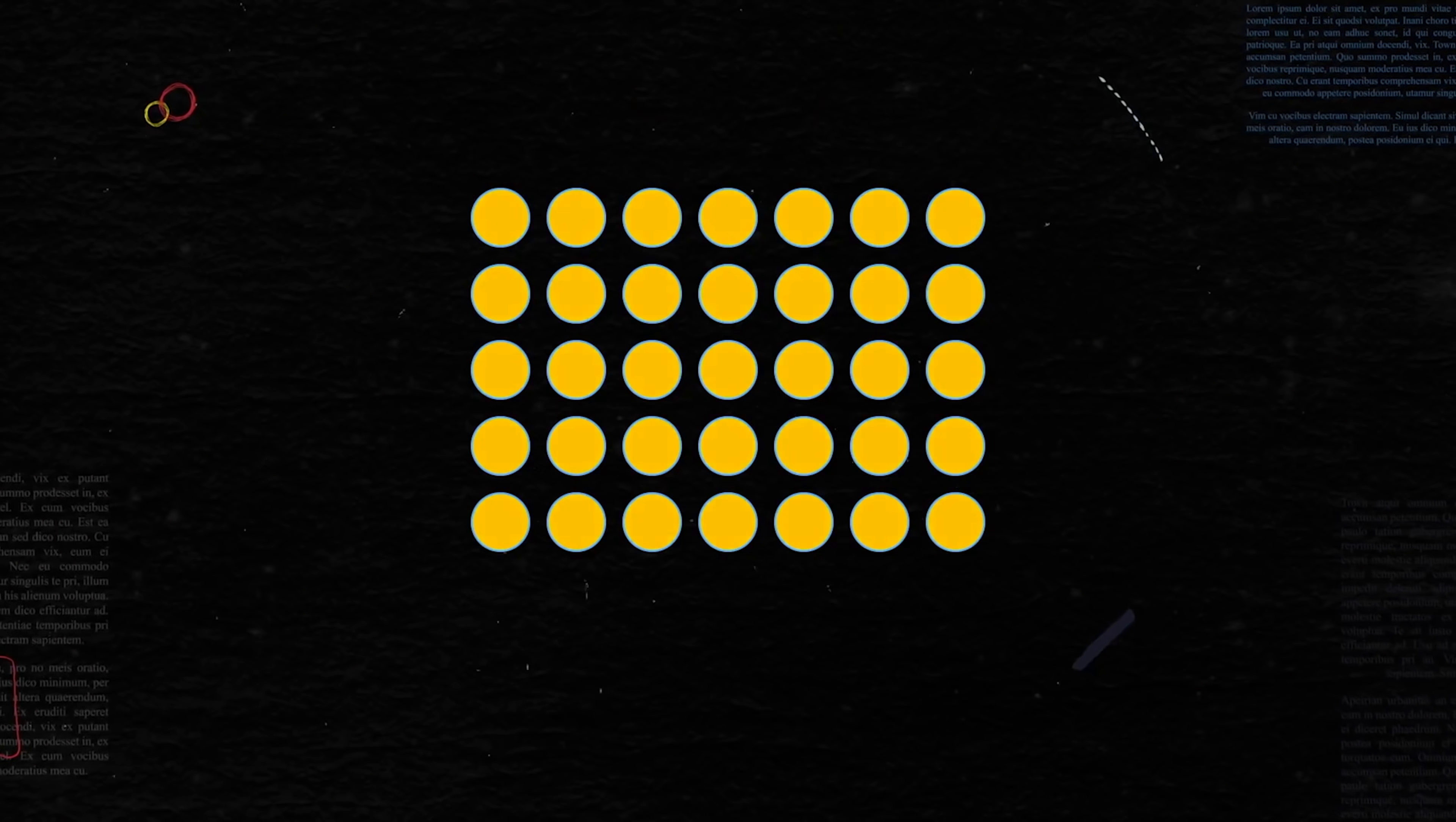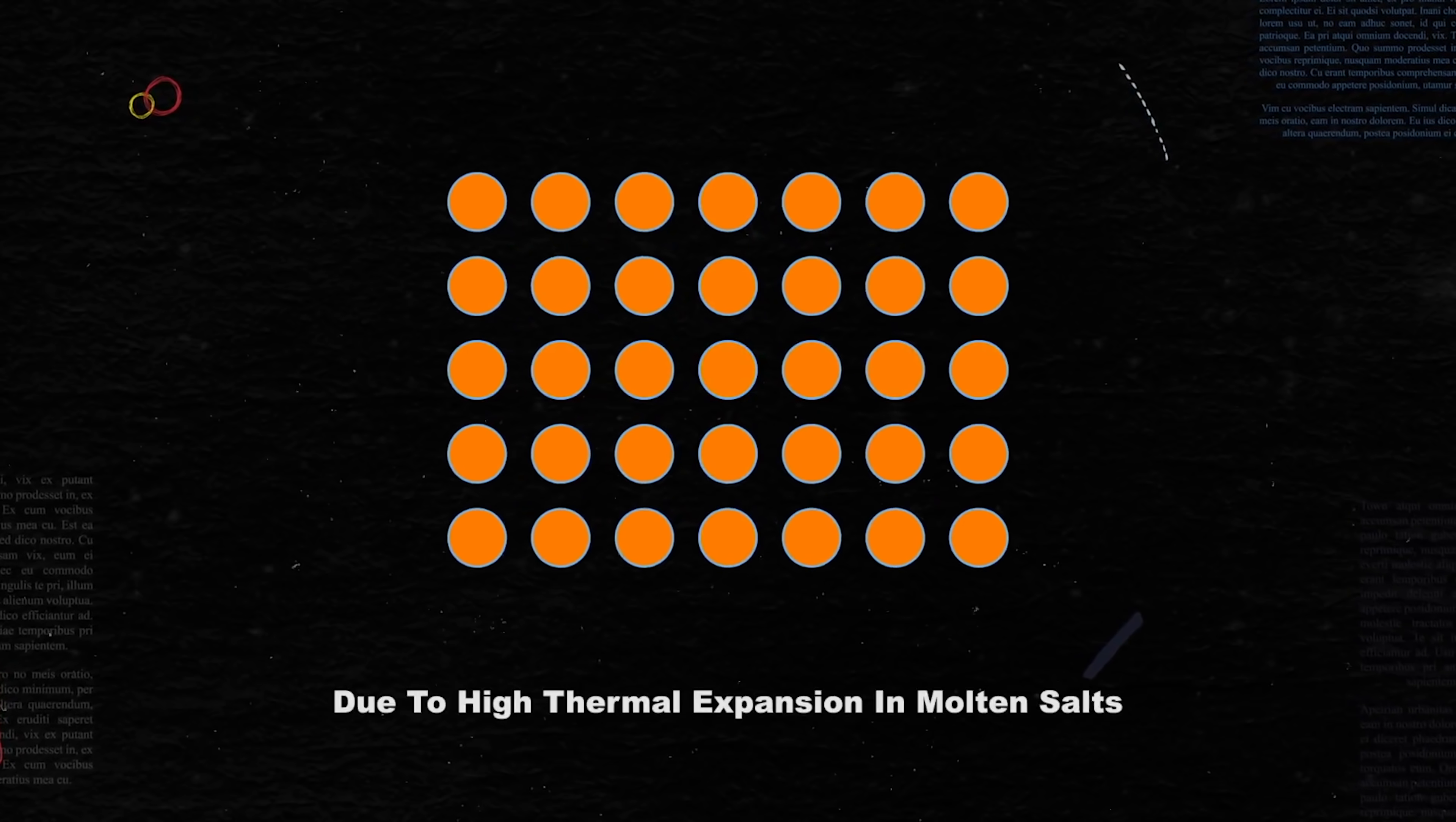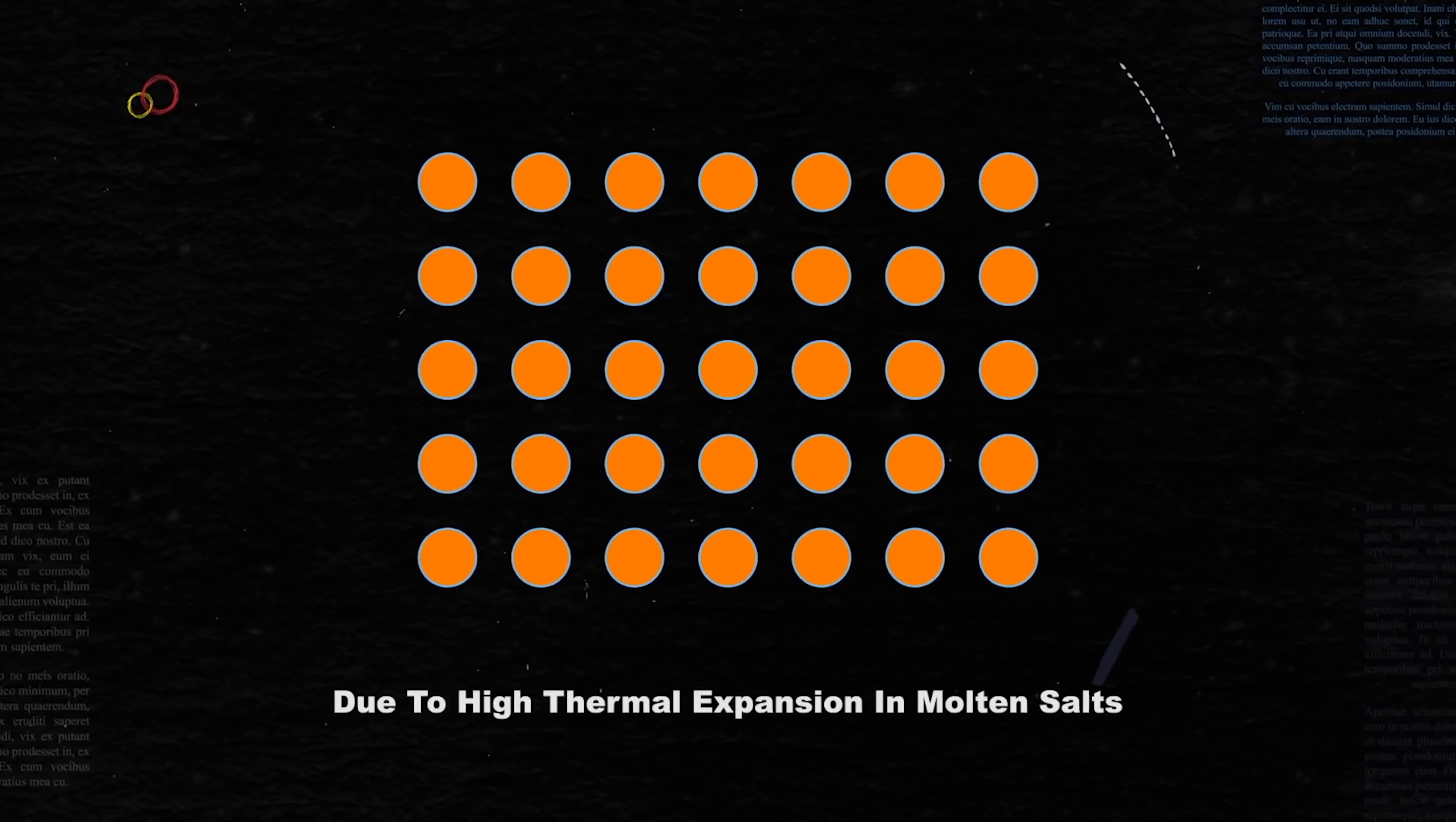But say the chain reaction gets out of control and the fuel starts heating beyond what is safe. Good news here too. This salt has a negative temperature coefficient of reactivity. If it heats up, the salt expands. The distance between the atoms increases, making it less likely that a neutron will hit anything. As the number of fissions decreases, the temperature goes back down.